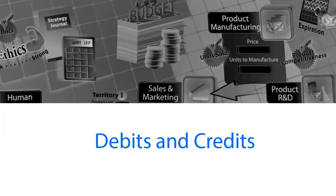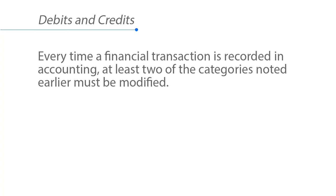Debits and credits. Every time a financial transaction is recorded in accounting, at least two of the major categories that we discussed have to be modified — for example, assets, liabilities, equity, revenue, expenses.